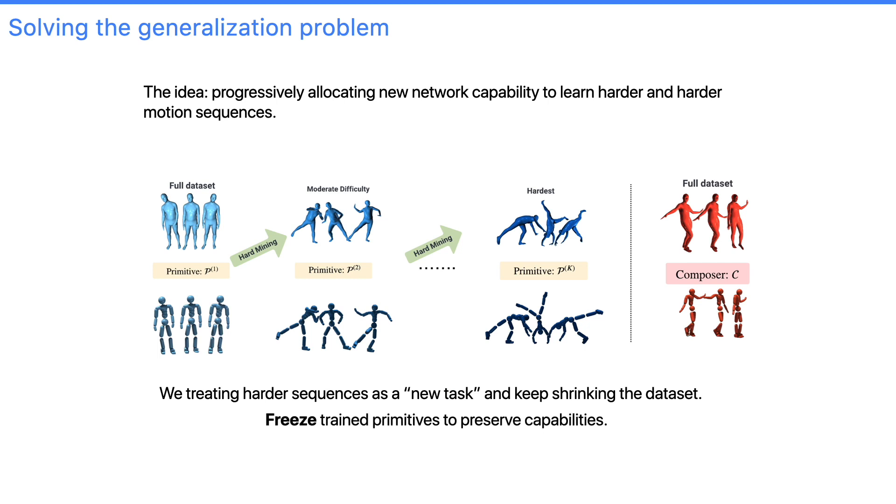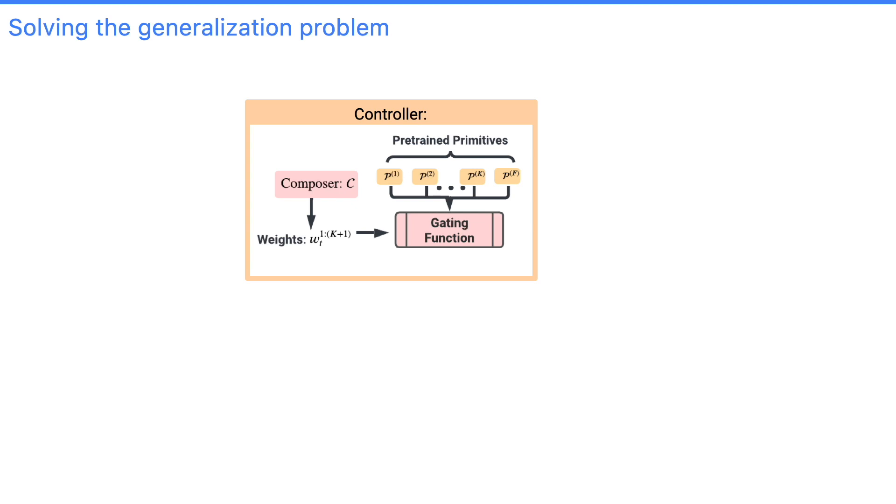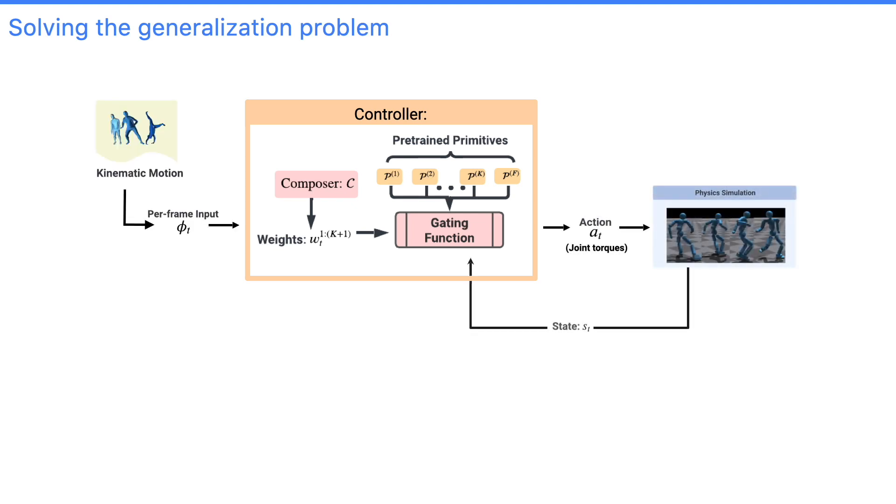After these primitives are learned, we can freeze them and find a way to dynamically switch in between during inference. This is easy, as we can use mixture of expert or multiplicative control and learn a composer on top of the trained primitives. A perfect composer should be able to cover the full dataset. And this forms our progressive multiplicative control policy.